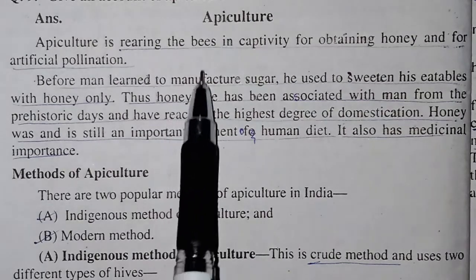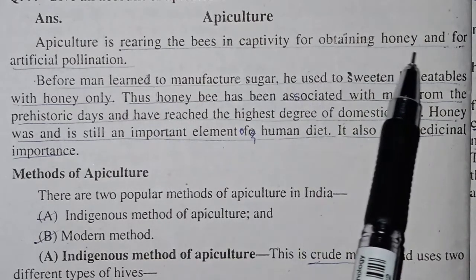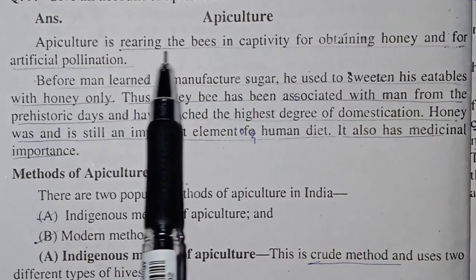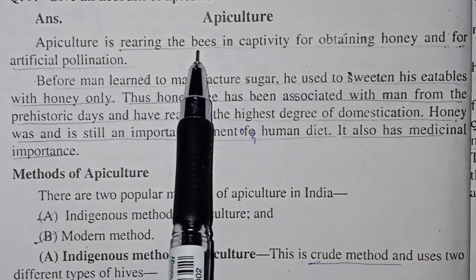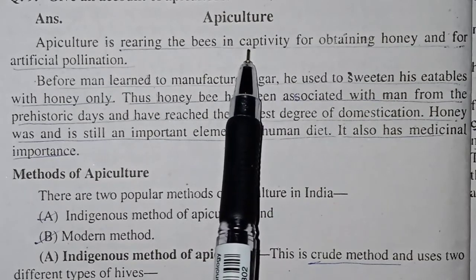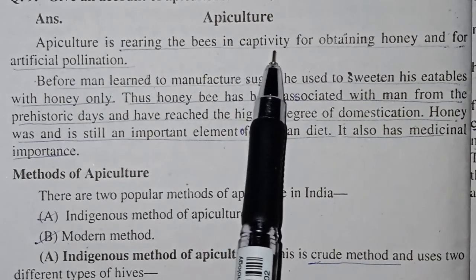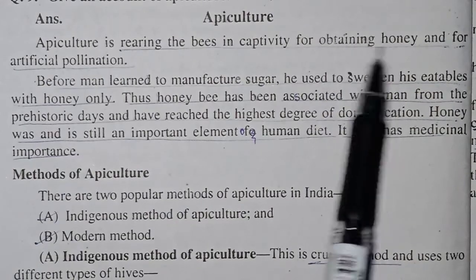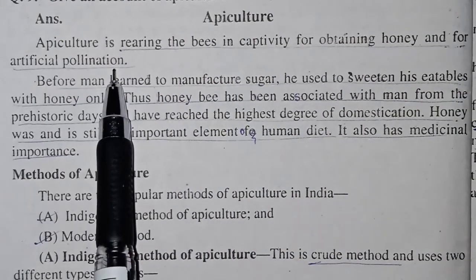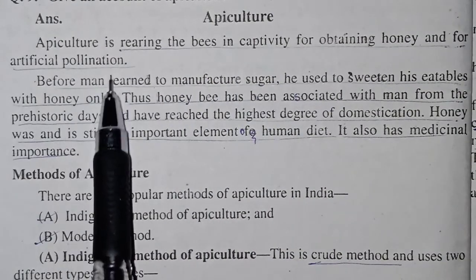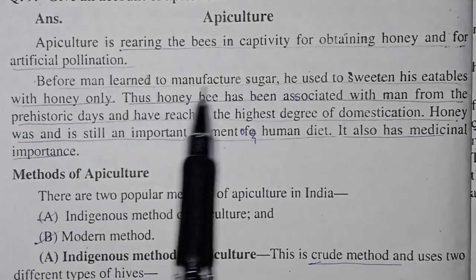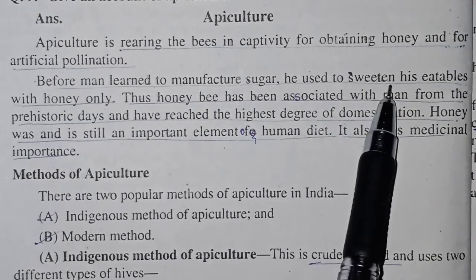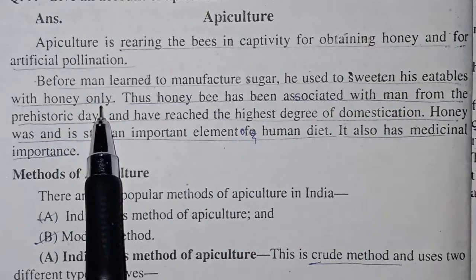Apiculture is rearing the bee in captivity for obtaining honey and for artificial pollination. Before man learned to manufacture sugar, he used to sweeten his eatables with honey only.